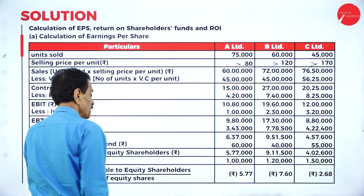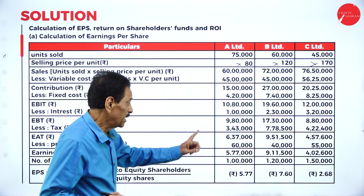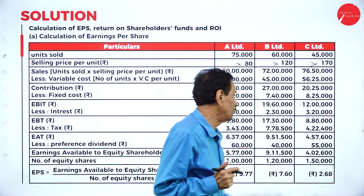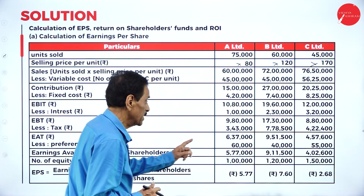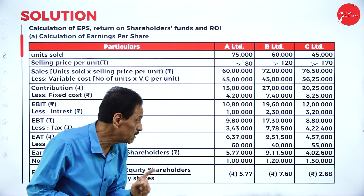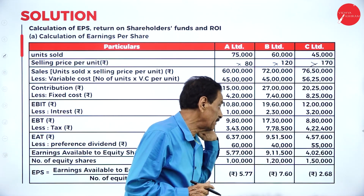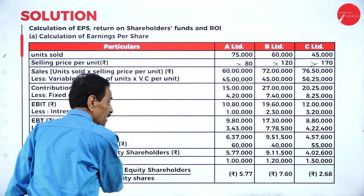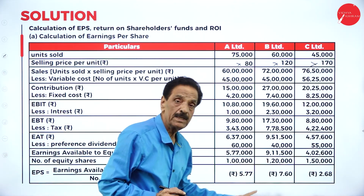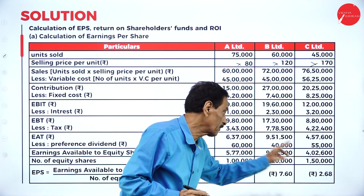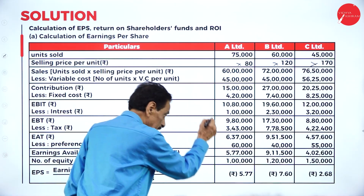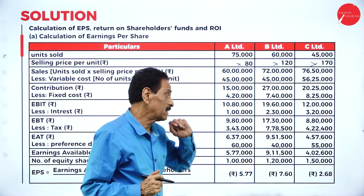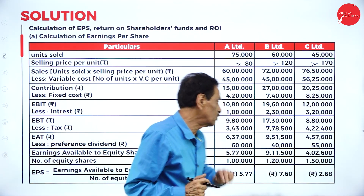Minus tax if we calculate: 3 lakh 43,000; 7 lakh 78,500; 4 lakh 22,400. The difference — earning after tax — is 6 lakh 37,000; 9 lakh 51,500; 4 lakh 57,600. Minus preference dividend: 60,000; 40,000; 55,000. If we deduct, it is 5 lakh 77,000; 9 lakh 11,500; 4 lakh 2,600. This is earning available for equity shareholders.